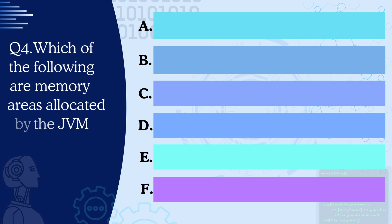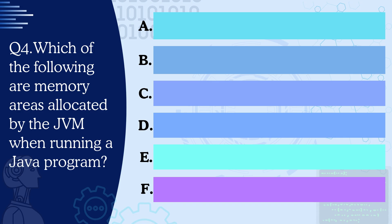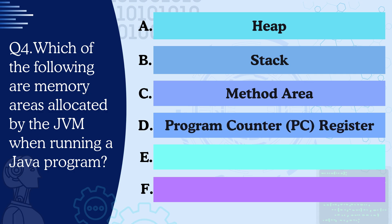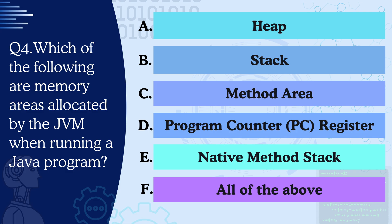Question 4: Which of the following are memory areas allocated by the JVM when running a Java program? A) Heap, B) Stack, C) Method Area, D) Program Counter Register, E) Native Method Stack, or F) All of the above. The correct answer is F — all of the above. All these are different memory areas in Java.